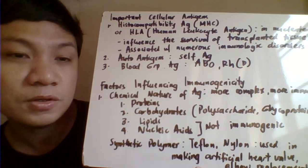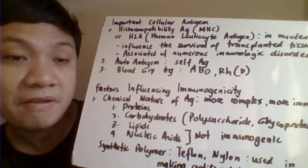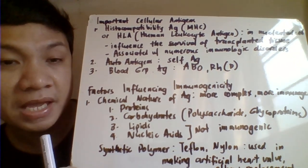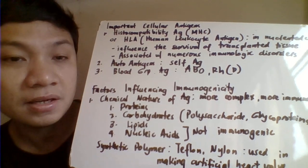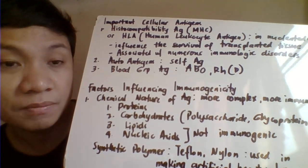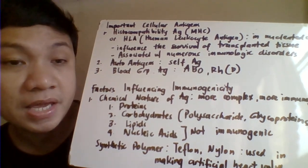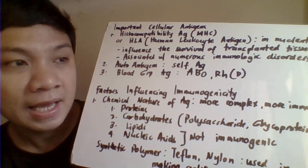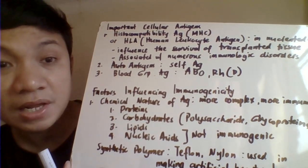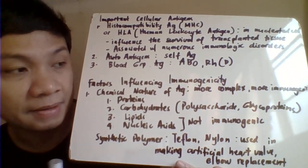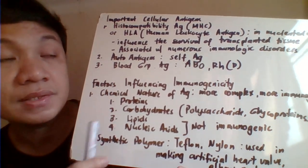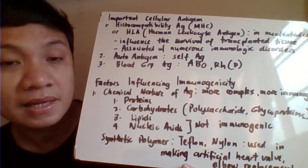The human leukocyte antigen can be found in all nucleated cells in our body. The HLA helps determine the success of transplantation — the donor and recipient must be compatible with their MHC or HLA to prevent rejection of transplanted tissues or organs. HLA is also associated with autoimmune disorders and allergic reactions. We also have the autoantigen, which is a self-reactive antigen that is still considered immunogenic because it can stimulate our immune response.